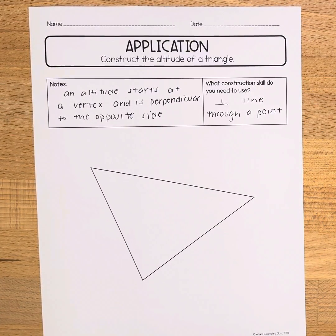In this video we will be constructing the altitude of a triangle. An altitude is a segment that starts at a vertex and is perpendicular to the opposite side.